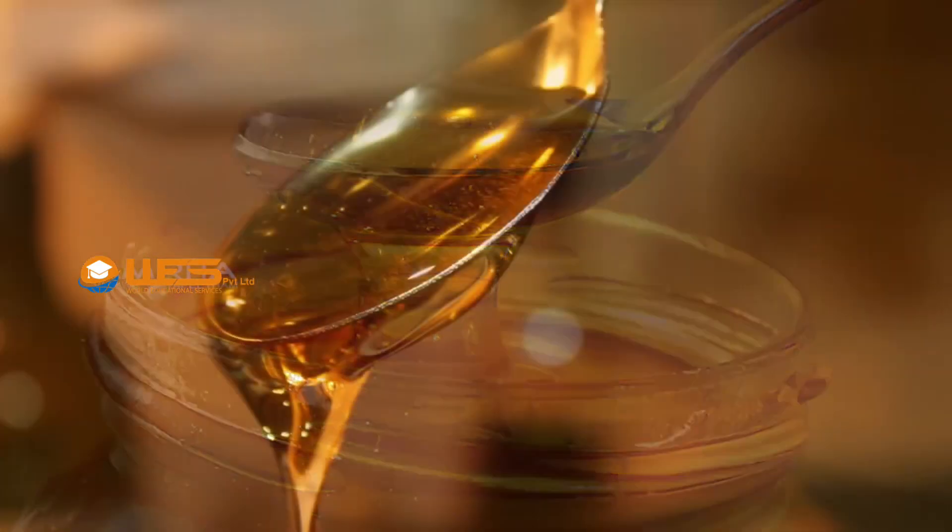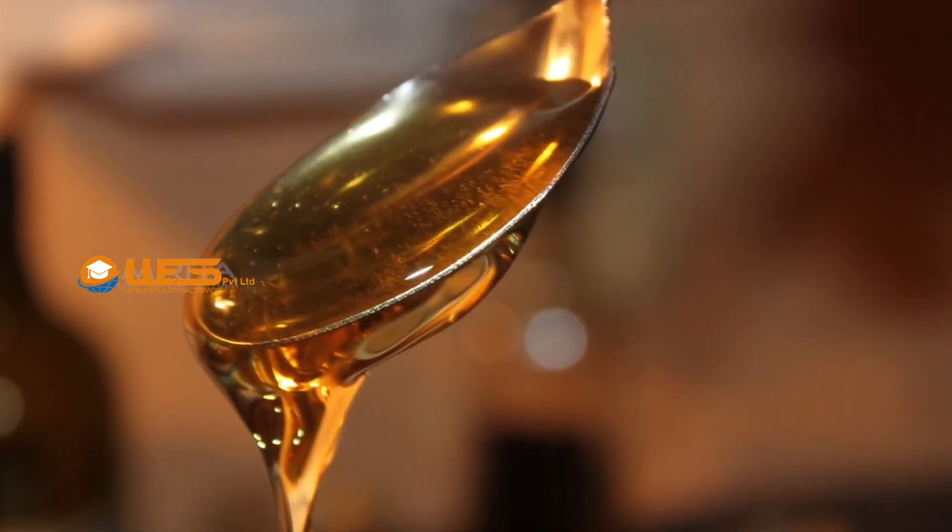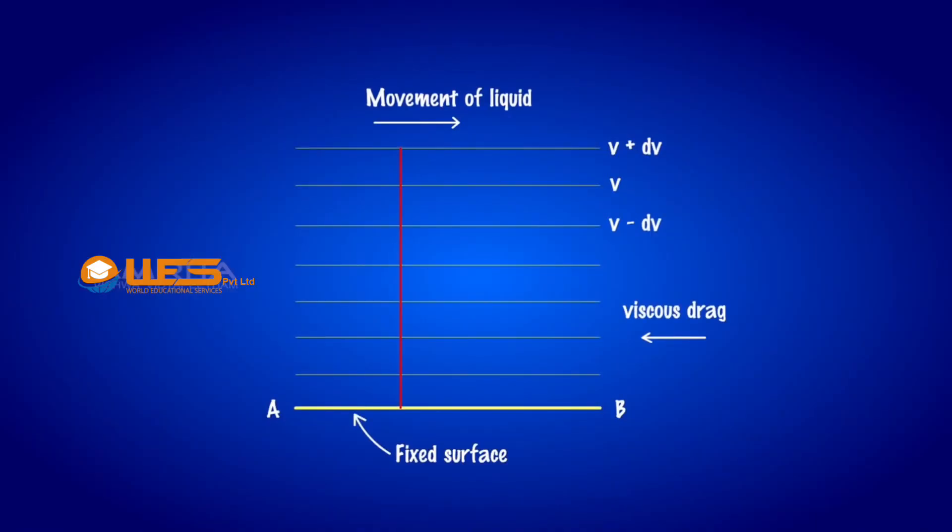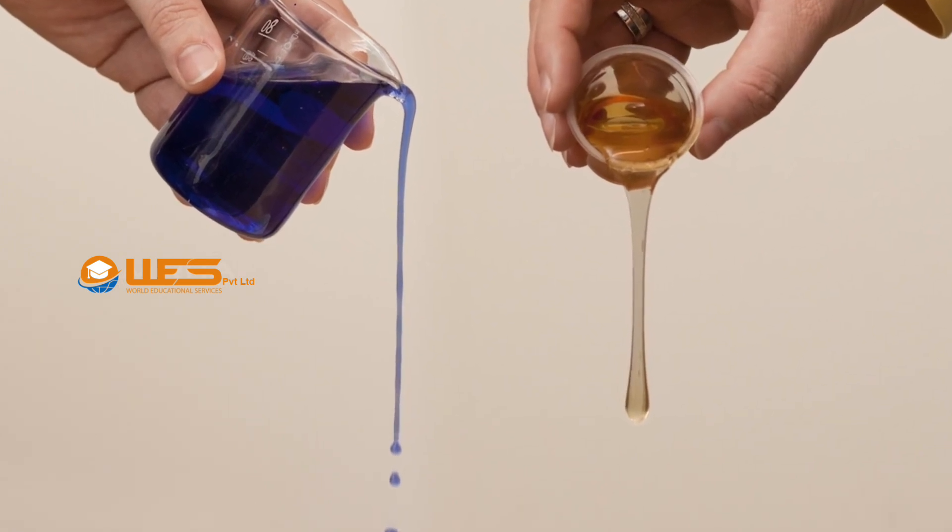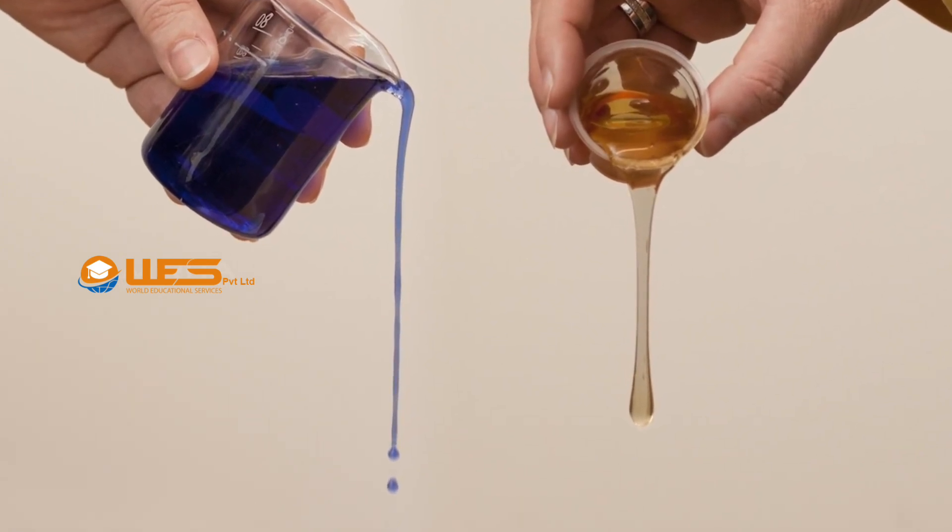Viscosity is the resistance of a fluid to flow. It is the internal friction acting between the layers of the liquid, analogous to friction when a solid moves on a surface. The difference in the speed of flow of different fluids is due to the difference in their viscosity.